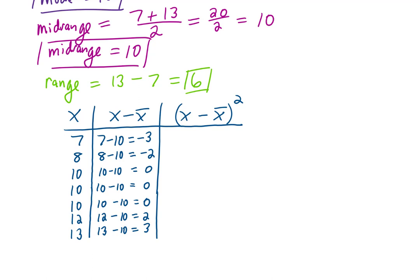Now, for the next column, we're just going to square every one of those results, keeping in mind that when we square a negative number, we get a positive number. And in this case, it's good to know that when you square zero, you get zero.